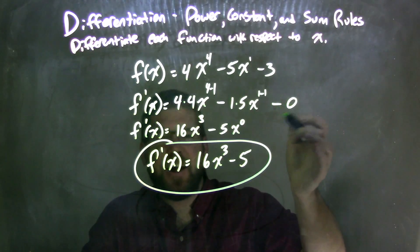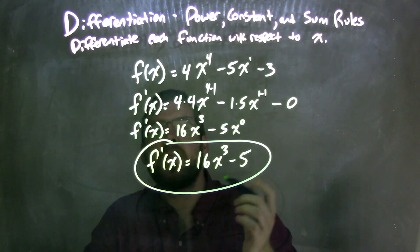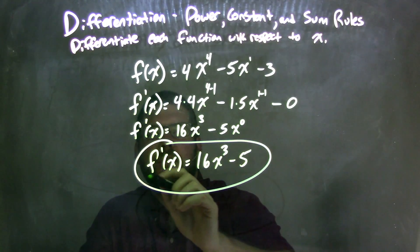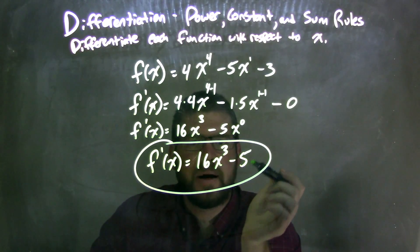All right, we didn't really care for the minus 0, because minus 0 doesn't change anything. It's the same function. So when we have x to the 0, it's just a 1 right there, gives us a 5, and so our final answer is f prime of x is equal to 16x to the 3rd minus 5.